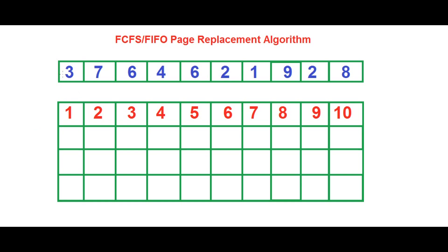So as you can see here, this is the area of data. The whole logic behind this is that there's a main memory and there's a cache memory. Whenever the processor needs to access some data, it first refers to the cache memory because it is the fastest memory available. If the data is not found in the cache, it then refers to the main memory. By default, all the data is stored in the main memory, and when it is required by the processor, it is brought onto the cache memory so the processor can access it faster.